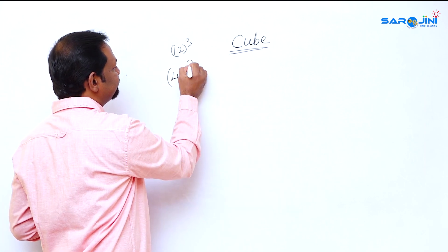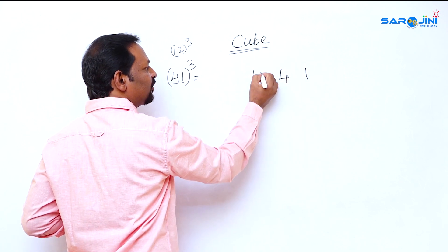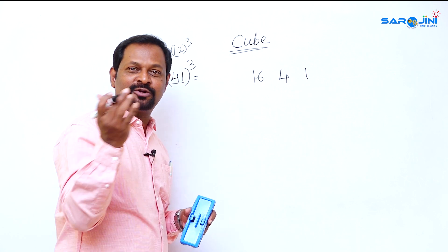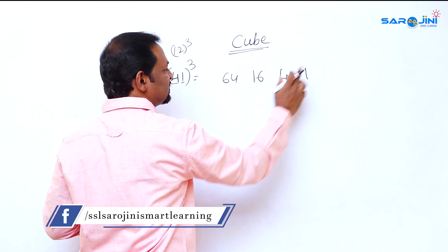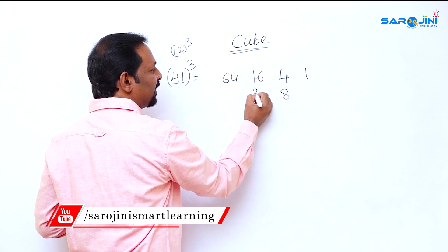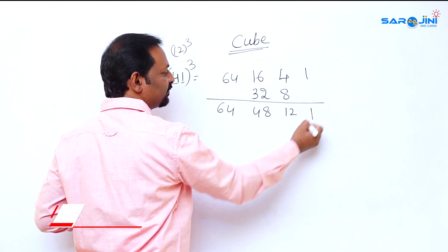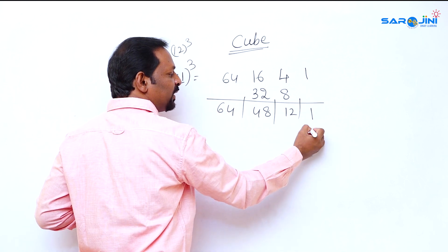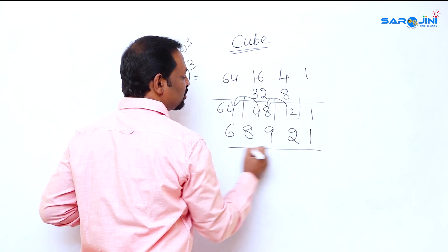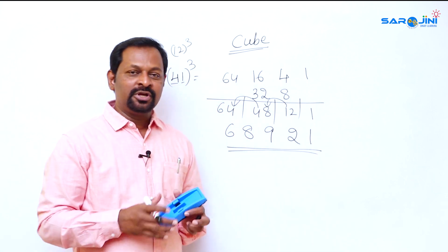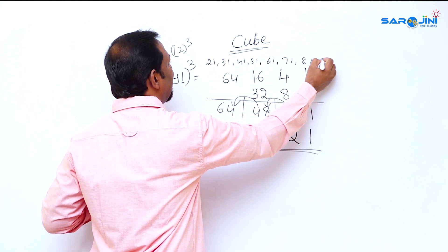Let's try 41 cubed. First part is 1, second part is 4. Write: 1, 4, four squared = 16, four cubed = 64. Double the middle values: double of 4 is 8, double of 16 is 32. We have: 64, 48, 12, 1. Apply balancing: bring down 4, carry 6; 6 + 2 = 8; then 4 + 8 = 12 — carry 1; giving us the answer. So 41 cubed equals 68921. This method works for 21, 31, 41, 51, 61, 71, 81, and 91 cubed.